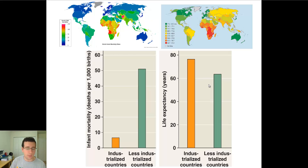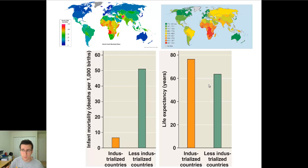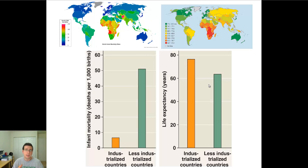One interesting pattern is that the mortality rate of young children is going to be a lot higher in less developed countries — countries that don't have the technology, the medicine, the education, the sanitation, and the resources that more developed countries have. Likewise, life expectancy is also going to be higher among developed countries. These two things put together create a certain situation in underdeveloped countries, because more children are dying and people are dying younger. This helps determine the kind of composition of the population you're looking at.